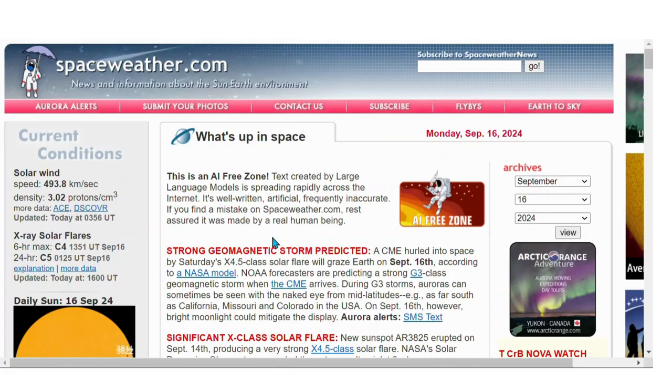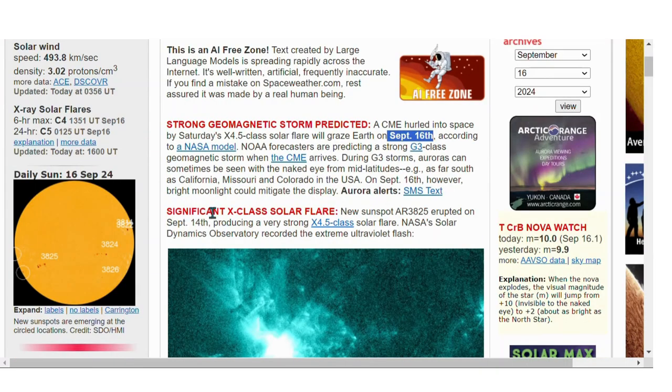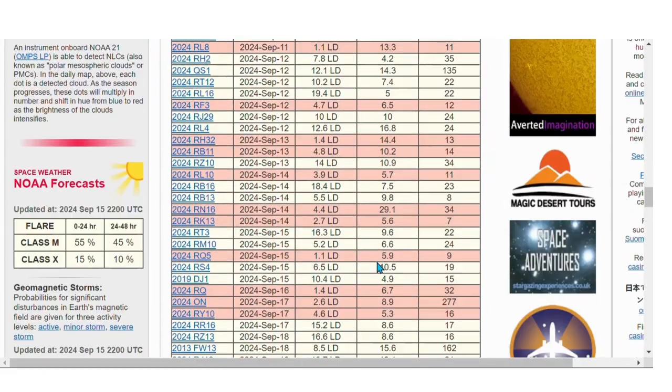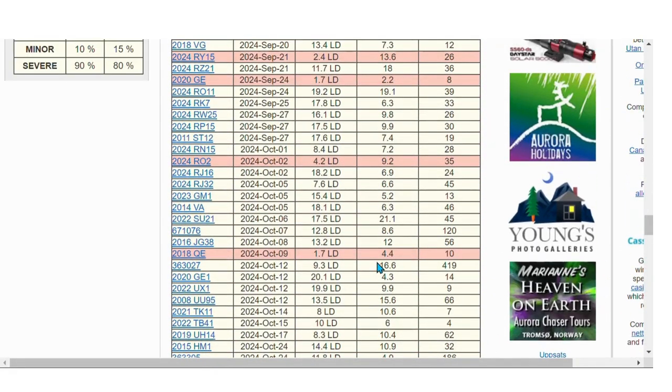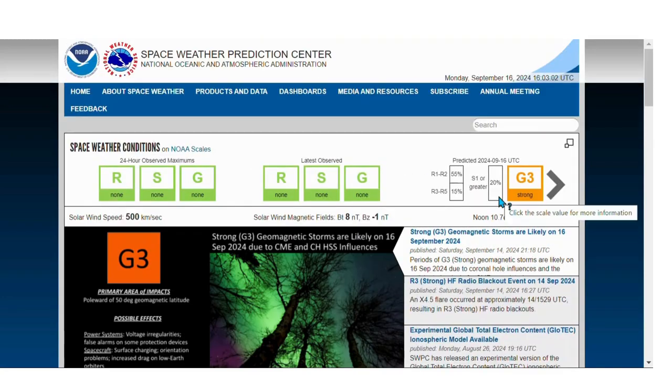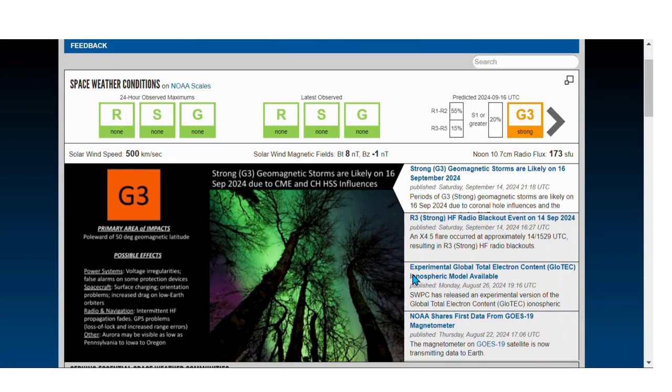On space weather today, strong geomagnetic storm expected September 16th from that X-Class 4.5. Take a quick look at the asteroids just to see. Nothing hasn't changed. G3 geomagnetic storm likely on the 16th due to the CME.